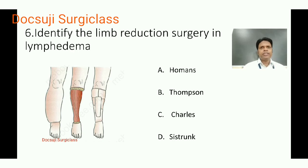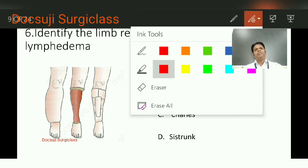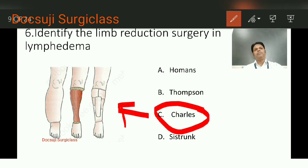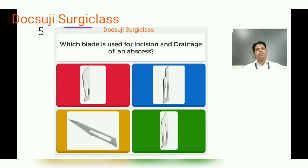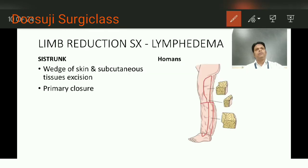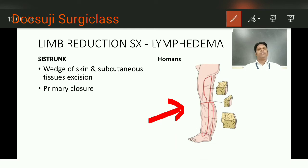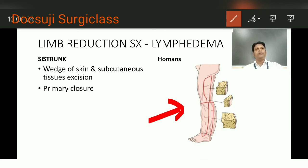Identify the limb reduction surgery in lymphedema. The four options — Sistrunk, Thompson, Charles, and Homans — are all limb reduction surgeries. The answer is the Charles operation. Sistrunk involves taking a wedge of skin and subcutaneous tissue excision, then closing it primarily. Homans procedure involves taking a wedge of skin and subcutaneous tissue from either the lateral or medial aspect and closing it primarily. You must give at least six months gap between the lateral and medial procedures because there are high chances of skin flap necrosis.